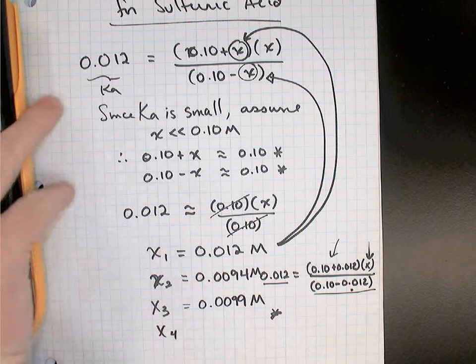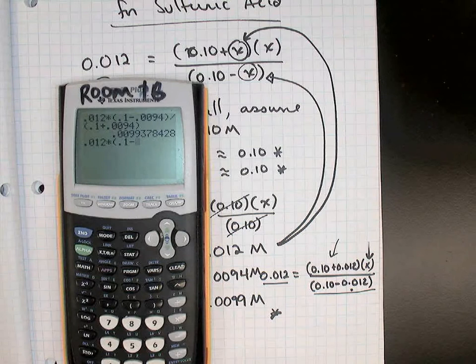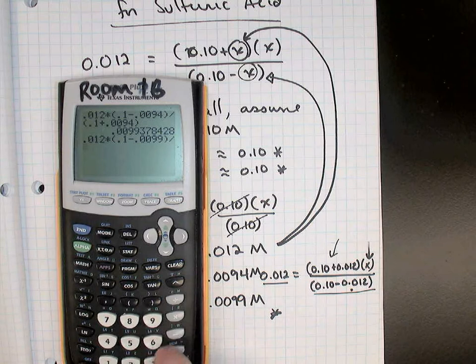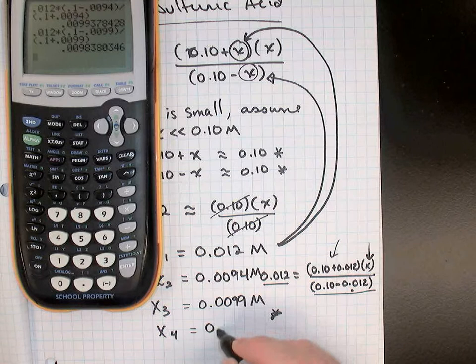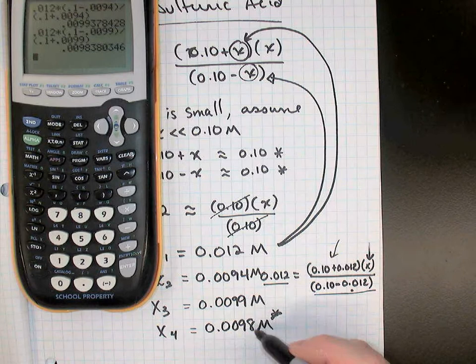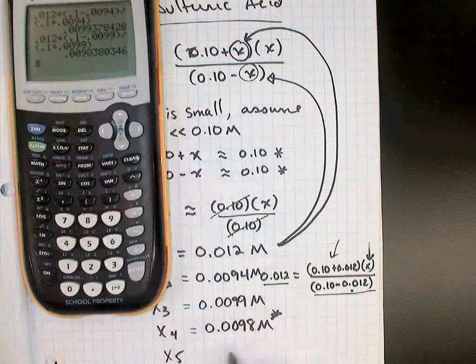Let's do a fourth approximation. So now we'll take 0.012 times open a bracket, 0.1 take away our third answer, 0.0099, close the bracket, divided by the brackets on top, 0.1 plus 0.0099, close the bracket, equals. And now I'm going to stop because my answer has changed by one in the last decimal. 99 became 98. When it does that, when it changes by just one or if it stays the same, I'm going to stop. If I did it a fifth time, I'm going to get this same answer.